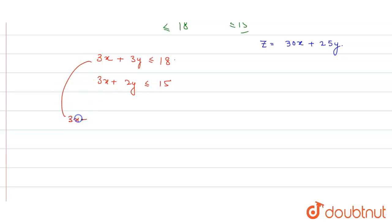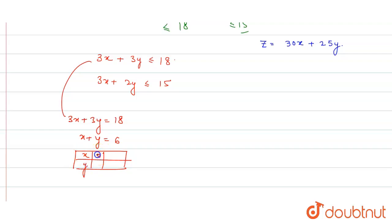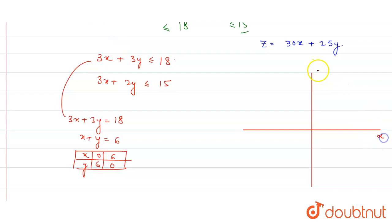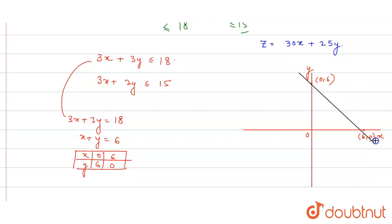This is our equation. For 3x plus 3y equals 18, that simplifies to x plus y equals 6. We plot this in the graph. For the line 3x plus 2y equals 15: when x equals 0, y equals 15 by 2, which is 7.5; and when y equals 0, x equals 15 divided by 3, which is 5. So the points are (5, 0) and (0, 7.5). The feasible region satisfies the origin side, less than 18.